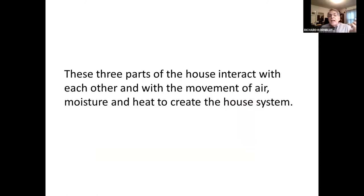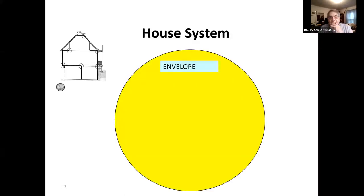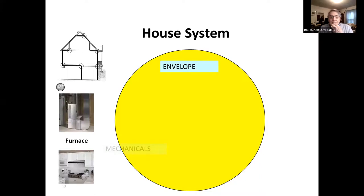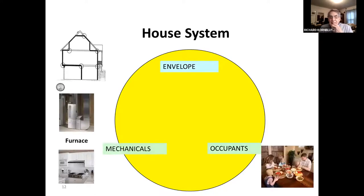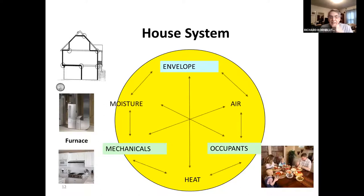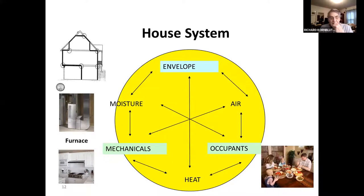So the three parts of the house interact with each other and with the movement of air, moisture, and heat to create the house system. We have the envelope, the mechanicals, and the occupants, with heat, moisture, and air all interacting together. They affect each other in ways that are mostly predictable and sometimes not — and some of those interactions can actually be harmful to the house and to the people who live in it.